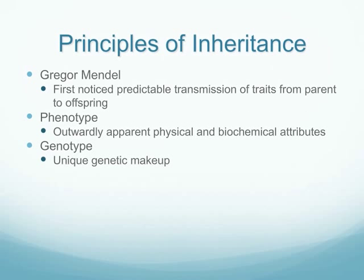Many of the principles we use to define inheritance come from Gregor Mendel, who identified predictable inheritance of specific traits between parent and child. We describe these in terms of phenotype — the outward physical and biochemical attributes of the person — as opposed to genotype, which is the genetic makeup. One way to remember the difference: genotype is the genetic piece, whereas phenotype is the way it's presented in the individual.